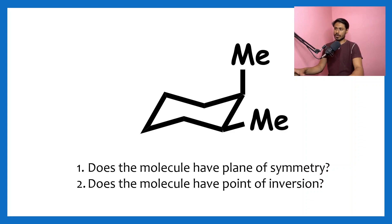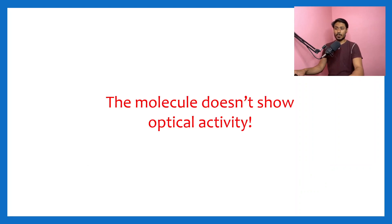Now we can expect that the molecule will show optical activity because it is chiral. But interestingly, the molecule doesn't show optical activity. This is confusing as well as interesting. What may be the reason? To find out, we have to look into the flipping of this ring, because cyclohexane rings can...